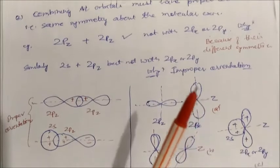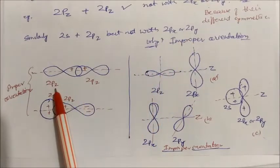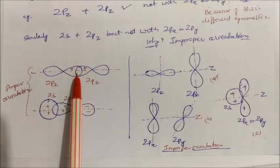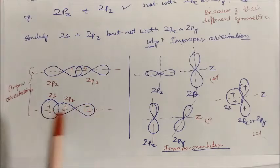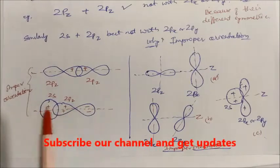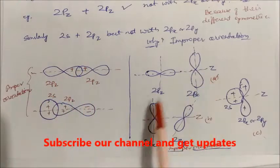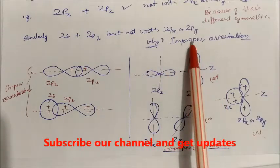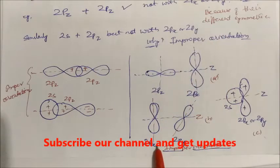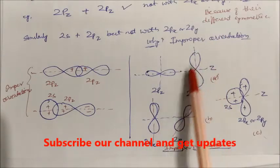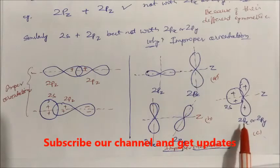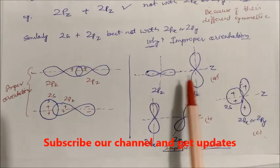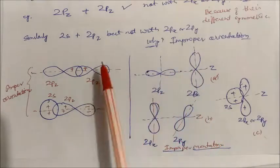Let us understand through this illustration. For 2pz and 2pz, you can see they share the same internuclear axis, the z-axis — so they are combining and overlapping. The overlapping portion is with the same phase, plus-plus. This is called proper orientation. But in the case of 2pz and 2px, the orientation is nil along the z-axis. Similarly, 2s combining with 2px or 2py represents improper orientation — the symmetry is not there.